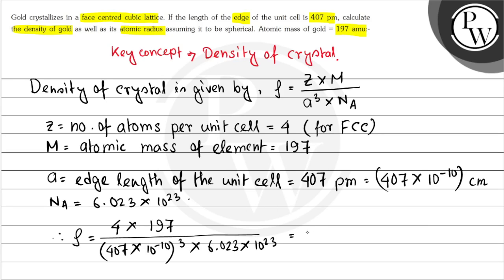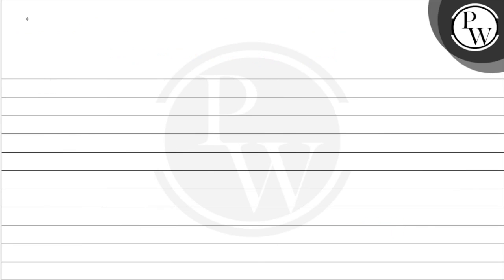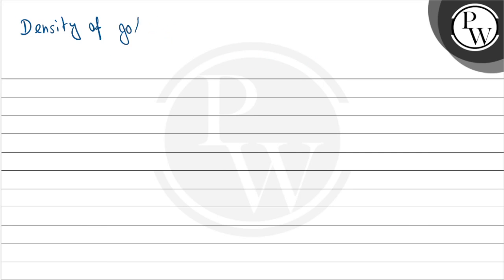The density of gold comes out to be 19.4 grams per centimeter cube. That is the final answer for the first part.